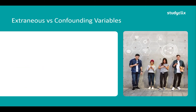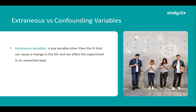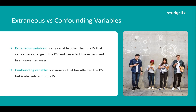Now let's go through extraneous and confounding variables. These can be quite complicated, so don't worry if you don't get them the first time. An extraneous variable is any variable other than the independent variable that can cause a change in the dependent variable and can affect the experiment in unwanted ways. A confounding variable, on the other hand, is a variable that has had an effect on the dependent variable but is also related to the independent variable. We don't know if the extraneous variable has had an effect, but we know the confounding variable has had an effect.